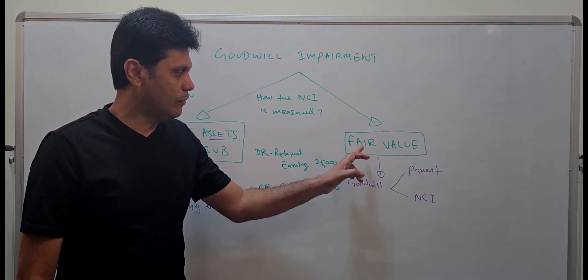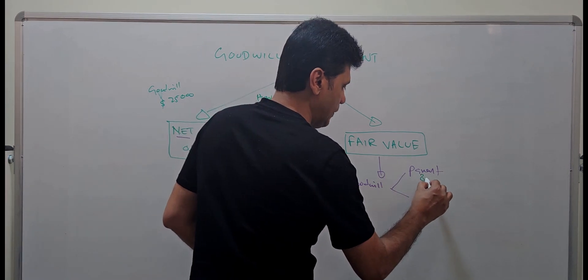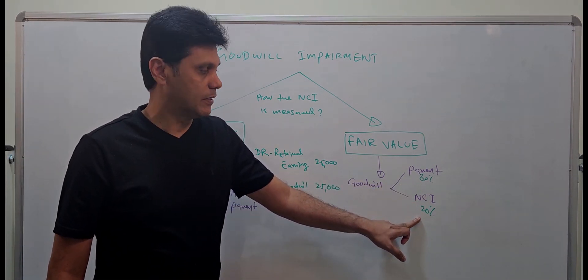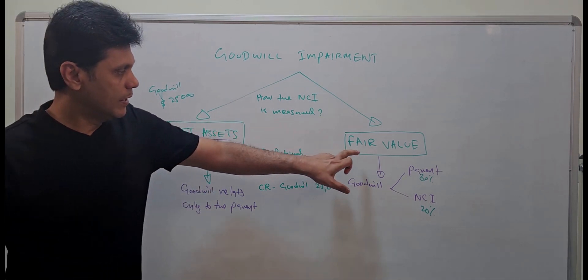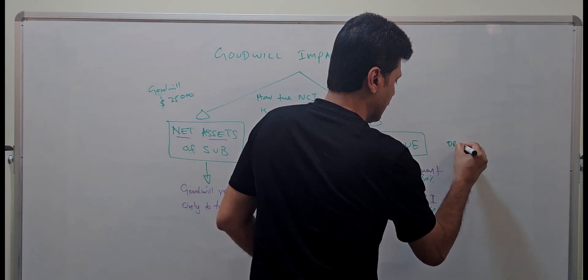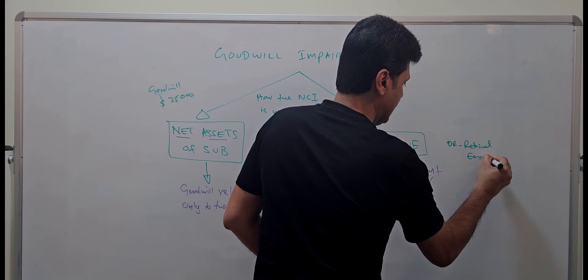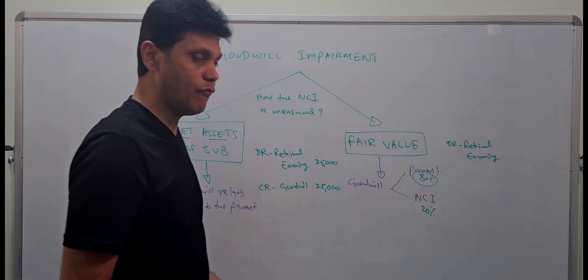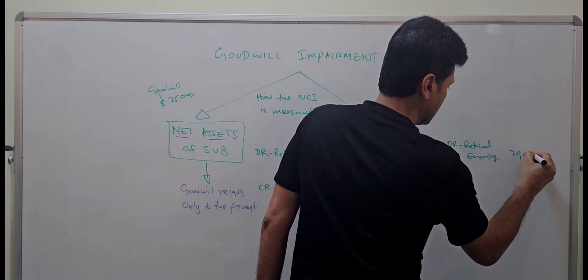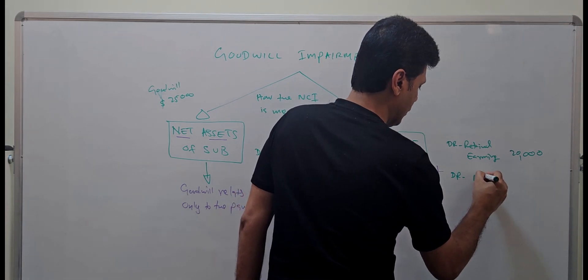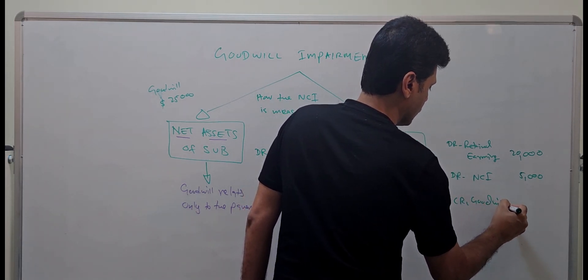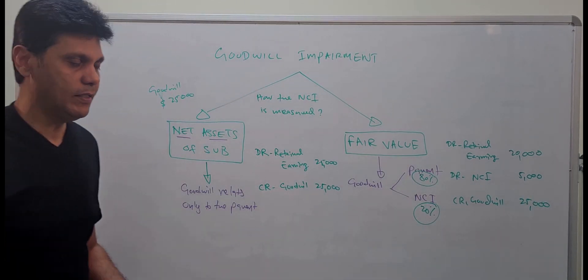When the NCI is valued at fair value — with parent ownership at 80% and NCI at 20% — you still credit the full 25,000 to goodwill, but you debit retained earnings for 80% of 25,000 which is 20,000, and debit non-controlling interest for the remaining 20% which is 5,000.